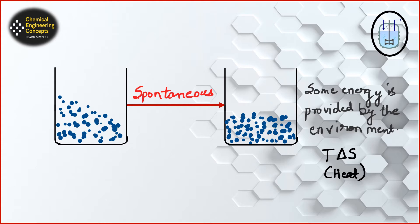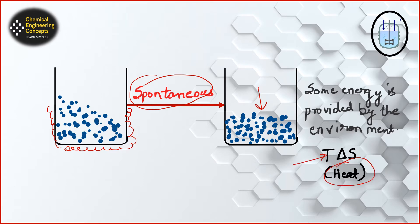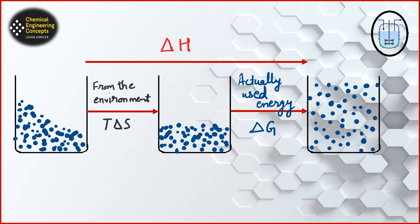Now consider the second case: if the environment itself is providing some amount of heat spontaneously to change the state of the system, that spontaneous energy from the surroundings will be in the form of heat, and that energy will be T·ΔS. This energy is being provided by the environment.